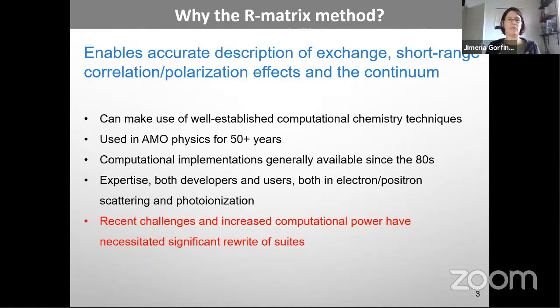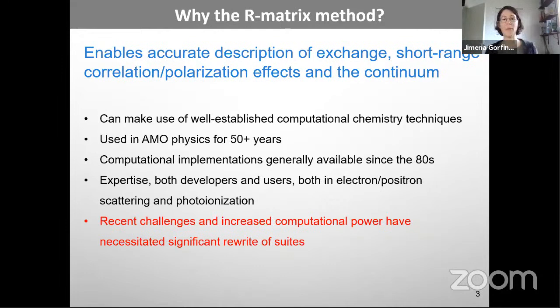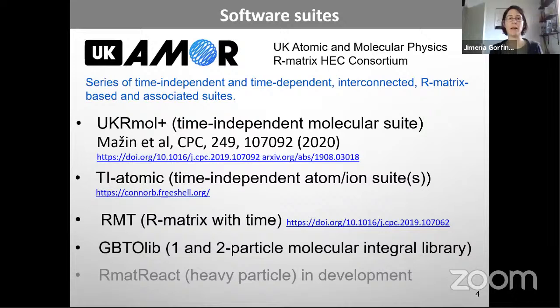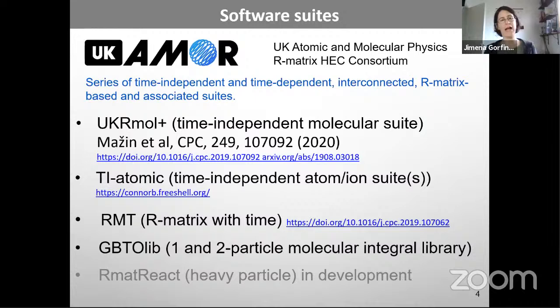The fact that R-matrix codes have existed for several decades doesn't mean those are the codes we use nowadays. Because of new challenges, new processes to study, new experiments to compare with, and significantly increased computational power, we have had to rewrite the suites. The UKRAMP project did a lot of rewriting of several codes.